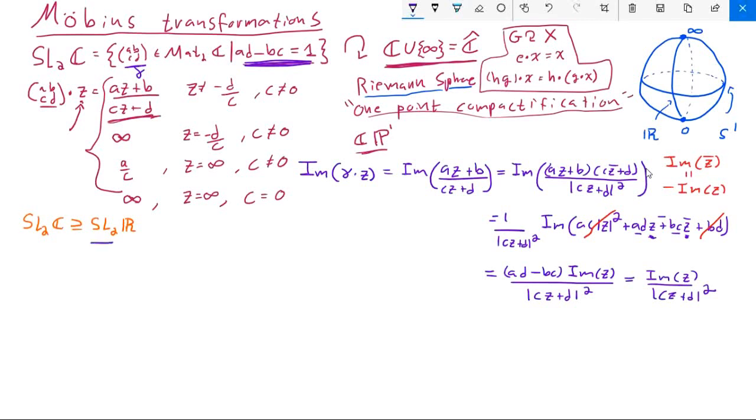So what does this mean for the action of SL2R in terms of this Riemann sphere? Well, consider if the imaginary part of Z were equal to zero to begin with, then following through the steps of our argument here, we can see that the imaginary part of gamma applied to Z must also be equal to zero. Therefore, SL2R can be seen as acting on the real numbers, because these are precisely the complex numbers with zero imaginary part.